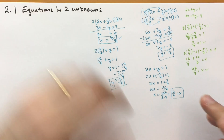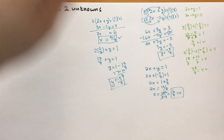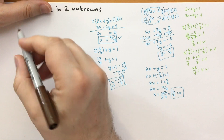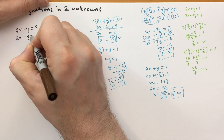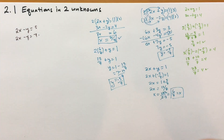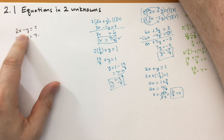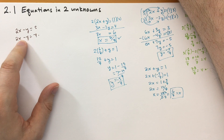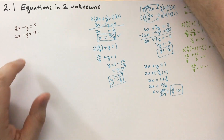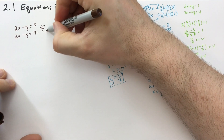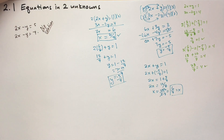Moving right along, let's do another system of equations. This system says 2x minus y equals 5 and 2x minus y equals 7. Obviously this has no solution. The 2x minus y part is exactly the same in both equations, but one equals 5 and the other equals 7 — that's clearly a contradiction. There is no solution, so don't waste your time.